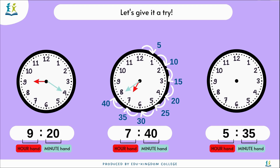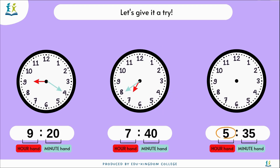For the last clock on the right here, the hour is at 5, so the hour hand will be pointing at 5. Since we know 30 minutes is going to be pointing at 6, so 35 will be 5 minutes after 30, which will be 35. 35 is at 7, so the longer hand will be pointing at 7.